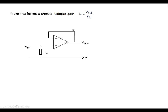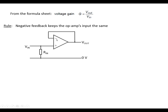Voltage Follower. Here's the circuit diagram for an op-amp voltage follower. Now the rule for all op-amp voltage amplifiers is that negative feedback keeps the op-amp's inputs the same. So we've got the output here being fed back into the inverting input — that's the negative feedback — and this happens unless the output is saturated, in which case the output can't follow the input.